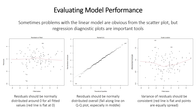Another useful plot is the scale-location plot, which plots the square root of the standardized residuals against the fitted values. This is essentially a different way of looking at the information from the first plot, but with all residuals made into positive values. Again, we're looking for the red line to be flat and for the dots to be roughly equally spread without high peaks or low valleys across the range.